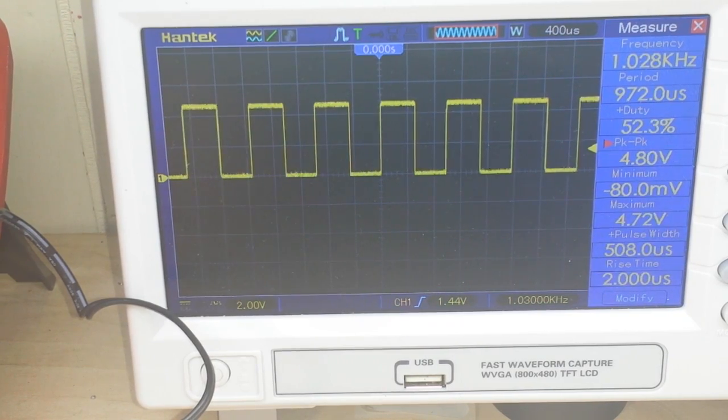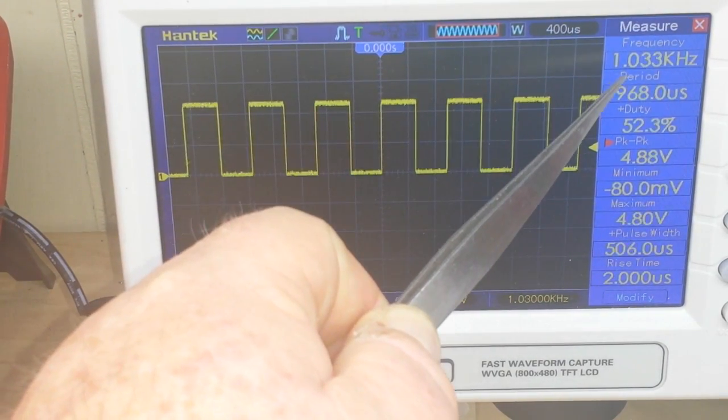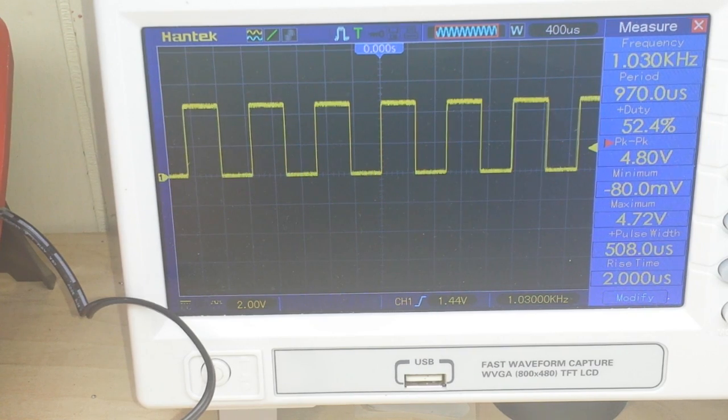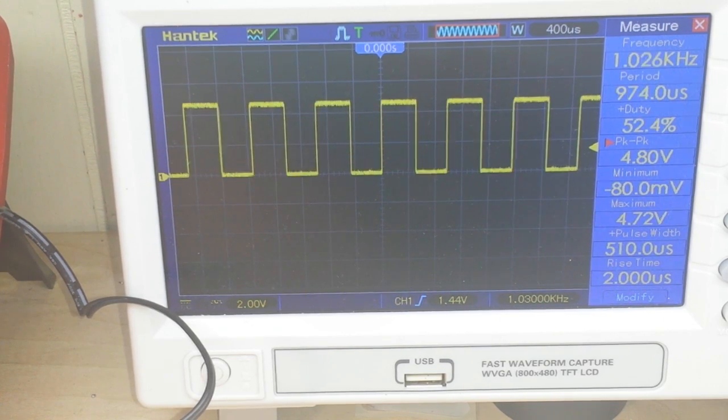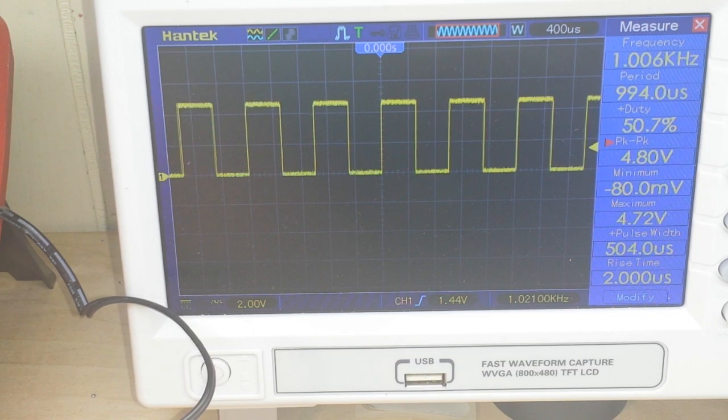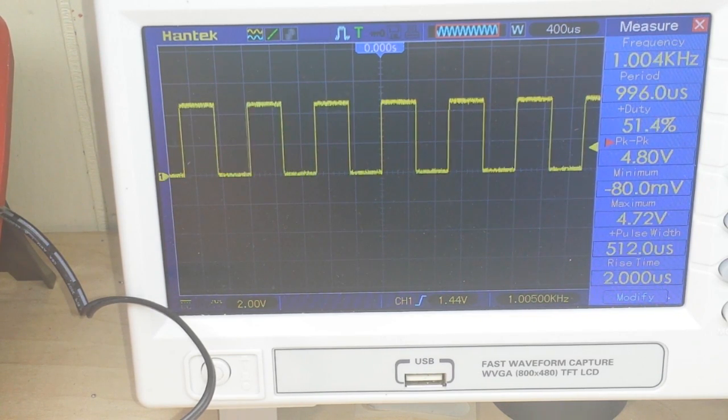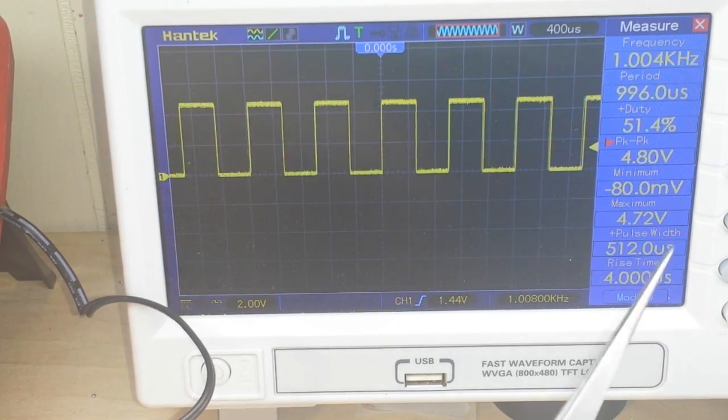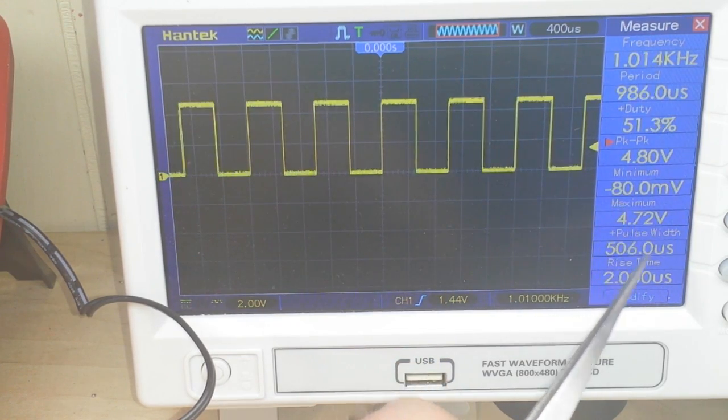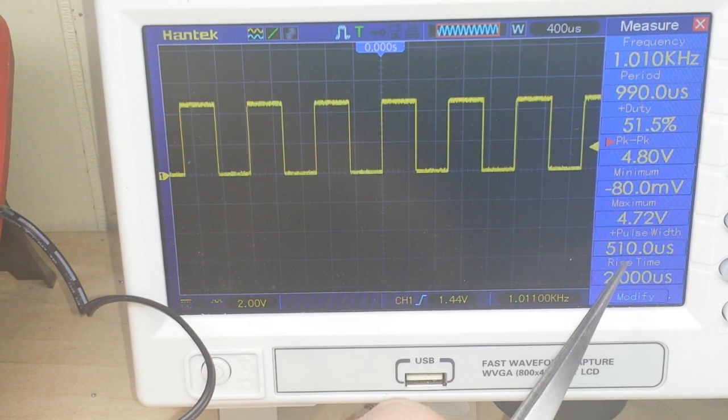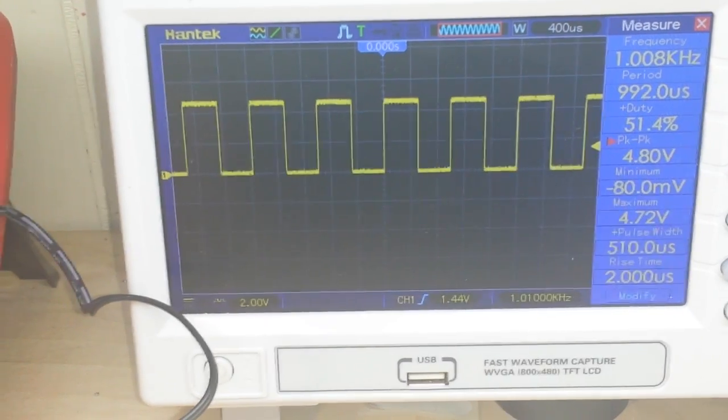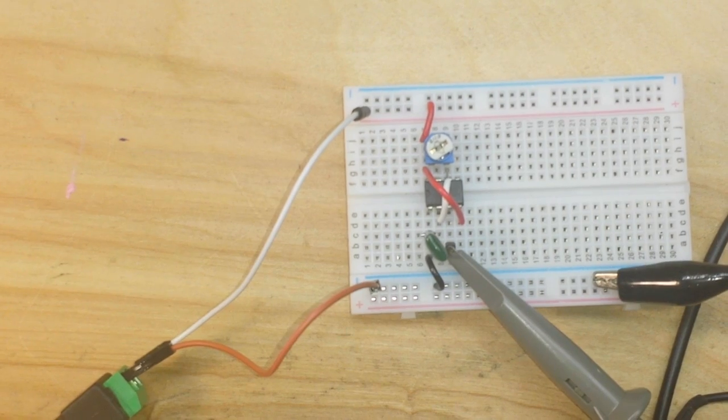We have our nice square wave. Our frequency is a little over 1 kilohertz. Our duty cycle is 52%. We can adjust that by adjusting that potentiometer we put there. Let's see. 52.6. There. Oh, so close. Come on. Close enough. I'm not going to mess with it anymore. We're putting in 5 volts. We are getting out 4.88 volts. Our pulse width is 500 and let's call it 10 microseconds. I mean, it doesn't get any easier than that. Boom. Right there.